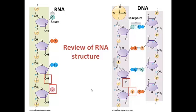RNA is a nucleic acid like DNA, but there are several differences. First, RNA contains uracil (U) instead of thymine (T). Second, at the 2' carbon, RNA has a hydroxyl group, whereas DNA has a hydrogen. So RNA contains the 5-carbon sugar ribose, whereas DNA contains deoxyribose. RNA is also a single-stranded molecule, as opposed to double-stranded DNA. However, like DNA, RNA is composed of a string of nucleotides and has direction — a 5' phosphate end and a 3' hydroxyl end — with nucleotide structures very similar to DNA.